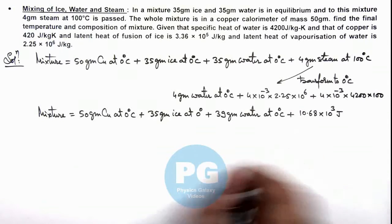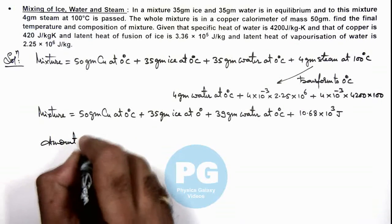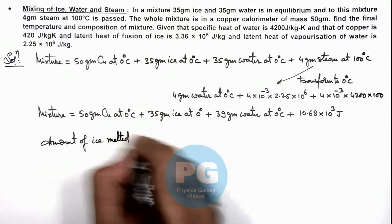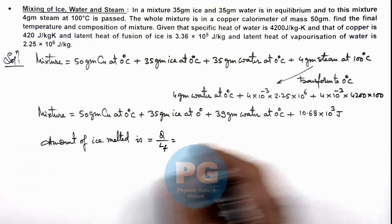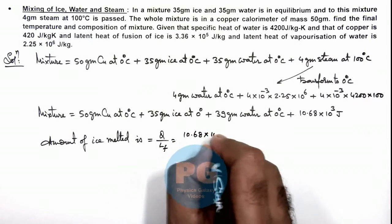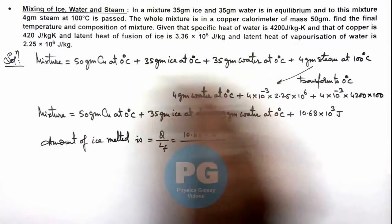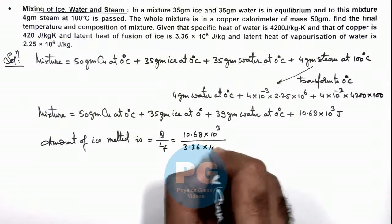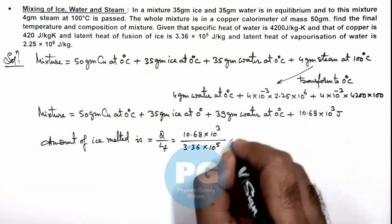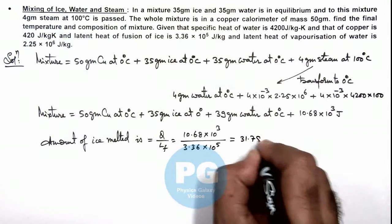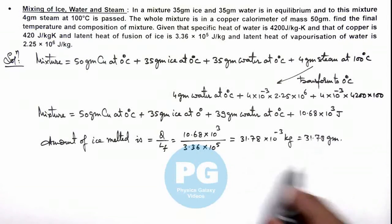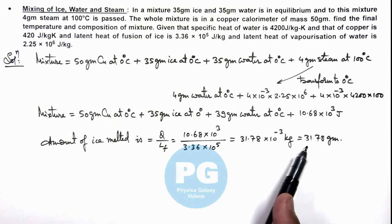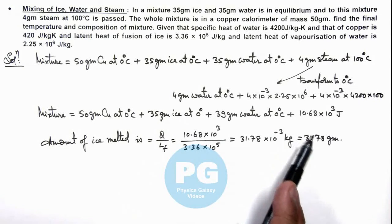If the whole ice melts, the remaining heat after melting will raise the temperature of the system. We first calculate the amount of ice melted. The total amount of ice melted equals Q divided by the latent heat of fusion. The heat available is 10.68×10³ divided by the latent heat of fusion. This gives us 31.78×10⁻³ kilogram, or 31.78 grams. That means the whole ice will not melt — if the amount came out to be more than 35 grams, then the whole ice would melt and remaining heat would raise the temperature.